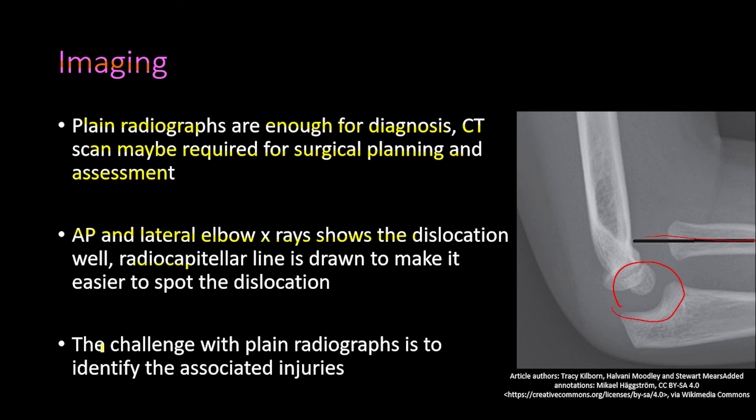Radiographs are repeated to confirm that reduction is good and the joint is congruent — meaning the joint space is equal along the articular surfaces. A repeat neurological examination is also performed to check for any injuries that may have occurred during the reduction.